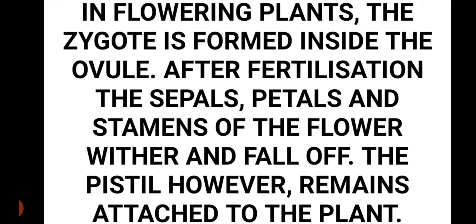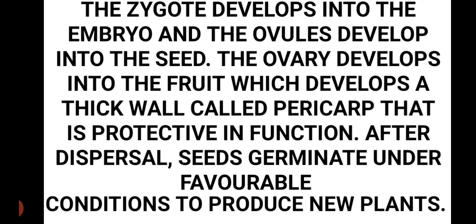In flowering plants, the zygote is formed inside the ovule. After fertilization, the sepals, petals, and stamens wither and fall off, while the pistil remains attached to the plant. The zygote develops into the embryo, the ovule develops into the seed, and the ovary develops into a fruit with a thick wall called the pericarp, which is protective in function.